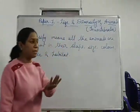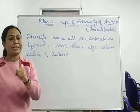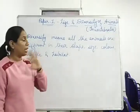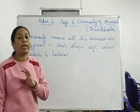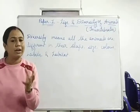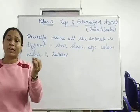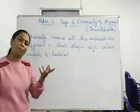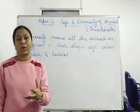Diversity means all the animals are different in their shape, size, color, habit and habitat. That means all the animals are different. If you are talking about different shapes, the animals can be different.